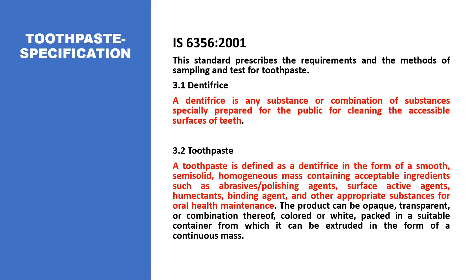When we try to understand the toothpaste specification as per Indian Standard 6356 in the year 2001, it clearly prescribes the requirements and the methods for sampling and testing for toothpaste. When we talk about oral products, two cleaning agents are there: first is tooth powder, and second is toothpaste. Tooth powder is defined as any substance or combination of substances specifically prepared for cleaning the accessible surfaces of the teeth — it actually refers to dry powders. Then came the concept of toothpaste.